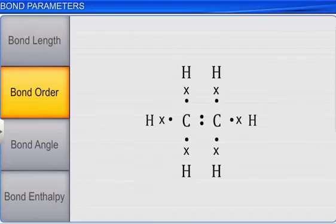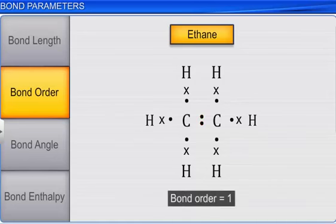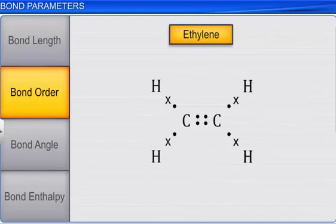Bond orders can be calculated from Lewis structures. For example, in ethane, two carbon atoms share one pair of electrons. Therefore, the bond order is said to be 1. In ethylene, two carbon atoms share two pairs of electrons. Therefore, the bond order is said to be 2.